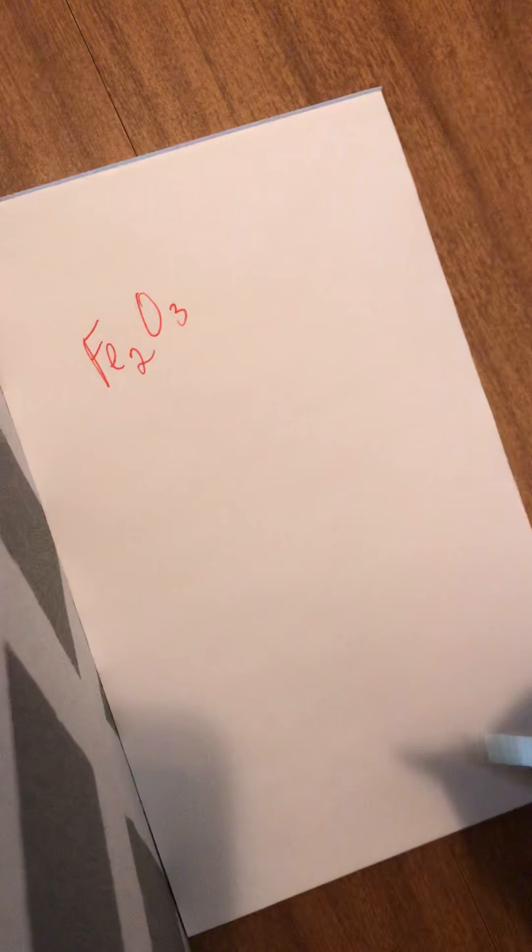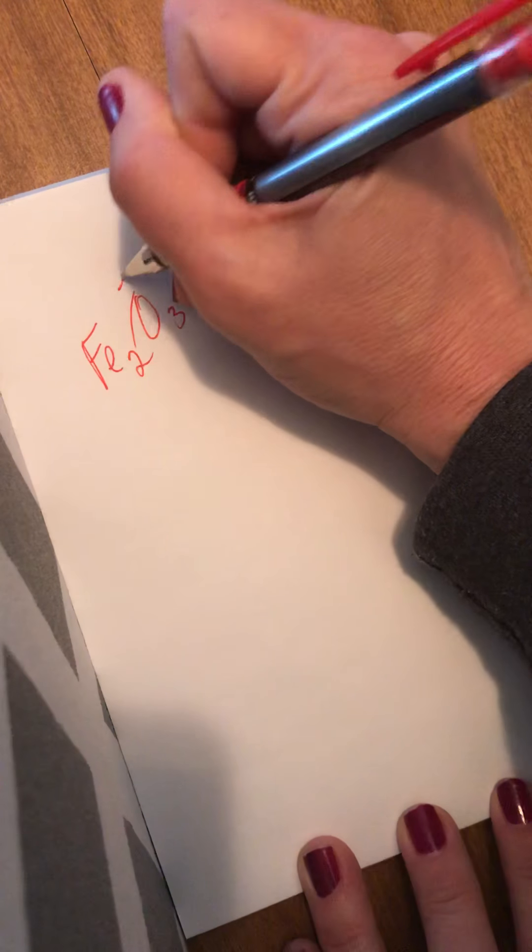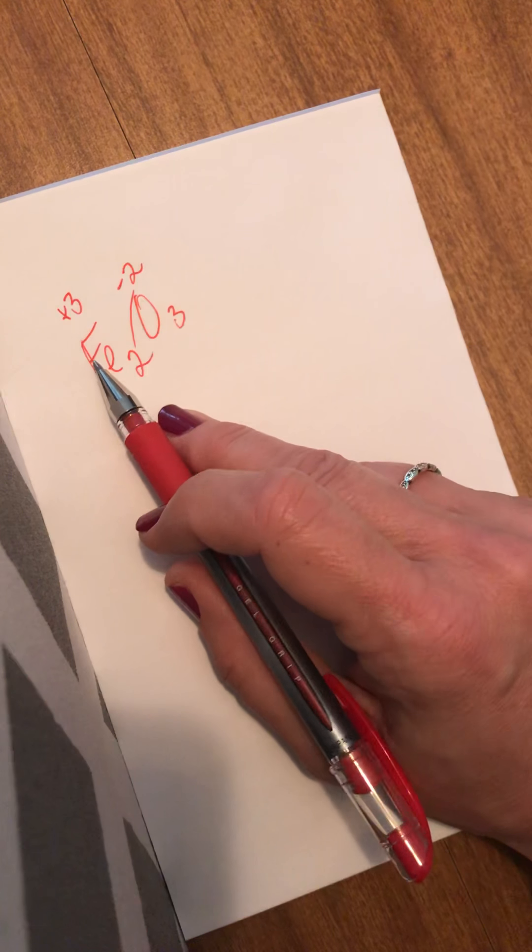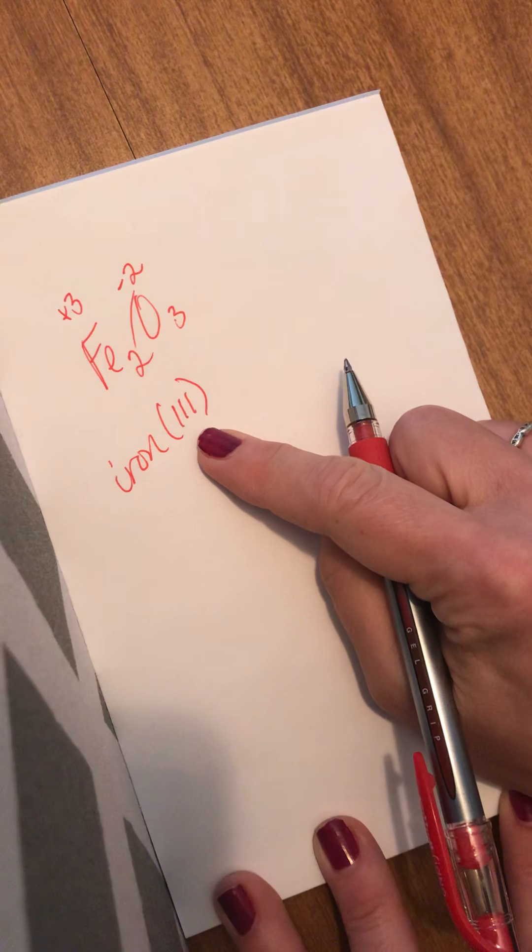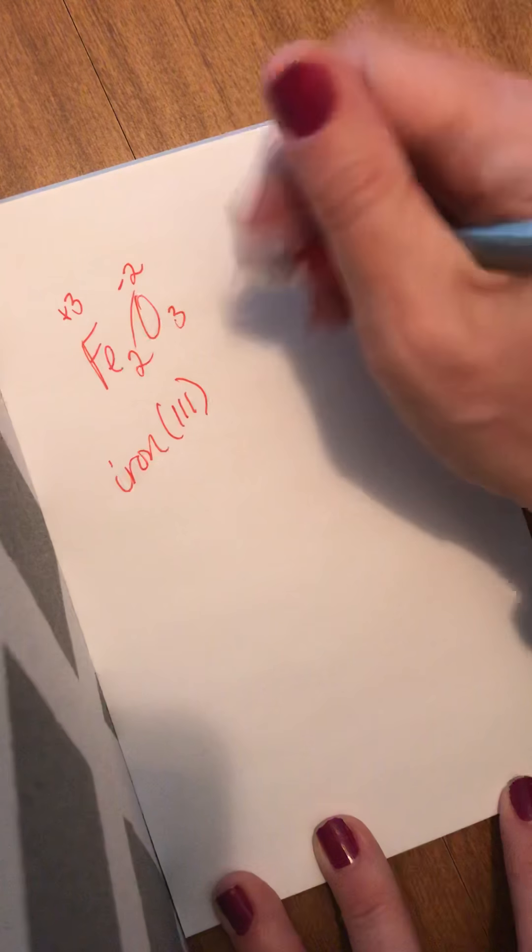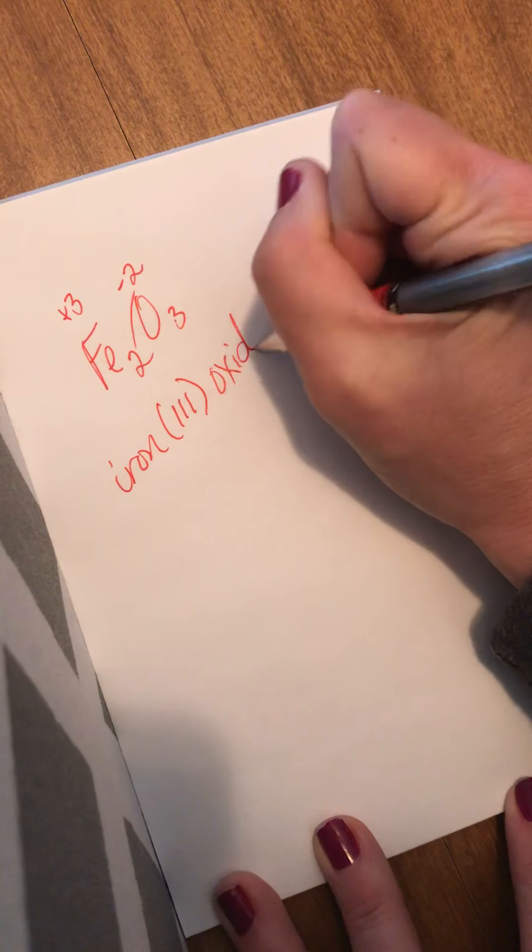So in order to know which number they are, I do this. This came from here, a -2. This came from here, a +3. My metal's always going to be my positive, my nonmetal's always going to be my negative. When I write the name, I write iron three. I put the three as Roman numerals inside of a parenthesis, and then oxide. That's how I do it.